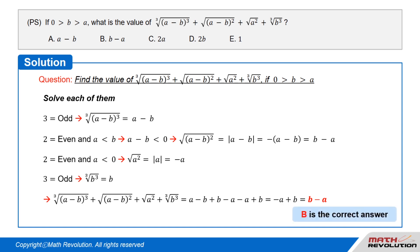So b minus a is the correct answer. Answer: b. Once you understand the properties, the questions become much easier to solve.